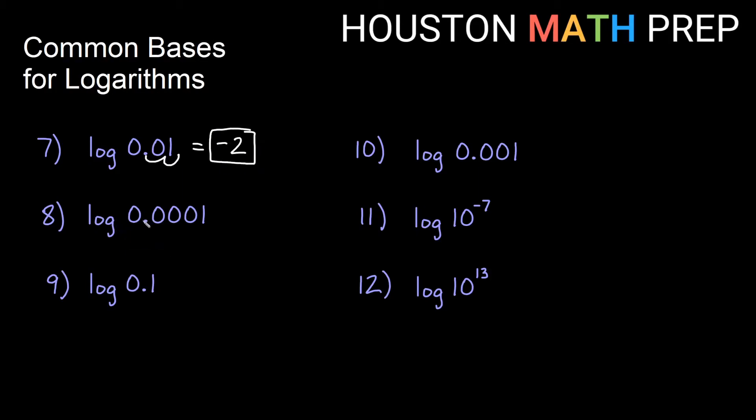If we think about 10 to what power gives us 0.0001, we can count the decimal places. Or think about for scientific notation, how many would I need to move the decimal place over to get a number between 1 and 10? The answer is 4 places, either way you think of it, and it's 10 to the negative 4 for this one.